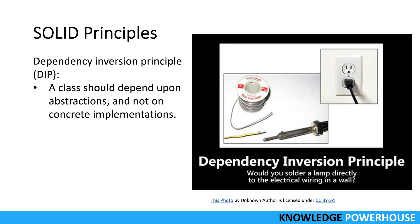Soldering would be costly to undo — similarly, in code, if you use 'new' to create an instance of a class inside another class, they become tightly coupled. Instead, pass that responsibility to a container. Both the socket and lamp can exist independently and also work together. The high-level module should not be dependent on low-level modules; both should depend on abstractions.